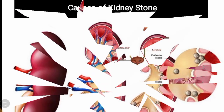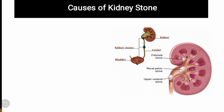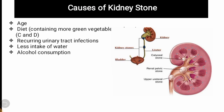Kidney stone کی major causes میں ایک main factor aging ہے۔ جب ہمارے kidneys ان چیزوں کو filter نہیں کر پاتے تو ہمارا system down چلا جاتا ہے۔ اس کے علاوہ ہماری diet بھی ایک وجہ ہے — جب ہم زیادہ vegetables intake کرتے ہیں تو ان میں salts اور یوریک ایسڈ وغیرہ موجود ہوتے ہیں۔